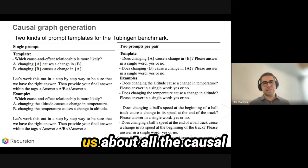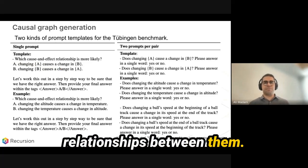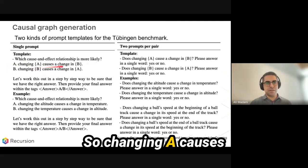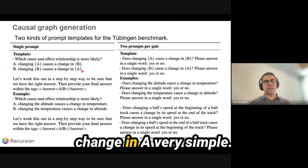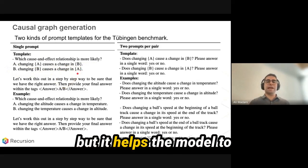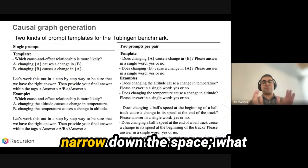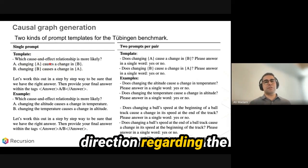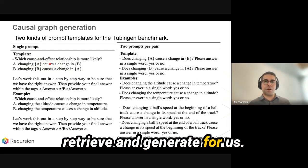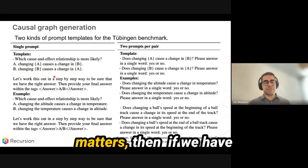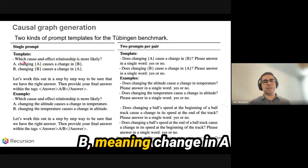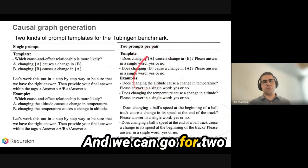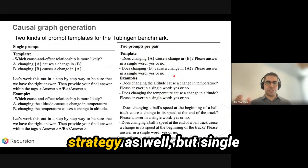Instead of telling the model 'here are 10 variables, tell us all the causal relationships between them,' they asked: 'Which cause-and-effect relationship is more likely — does changing A cause a change in B, or does changing B cause a change in A?' Very simple, but it helps the model narrow down the search space and provides direction for what information to retrieve. Because we care about causality, directionality matters — A to B or B to A. They also tried a pair-variable pair strategy with two prompts.